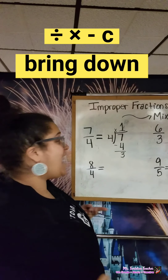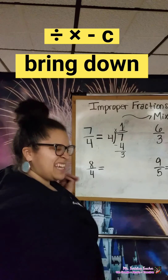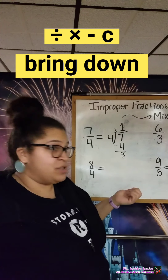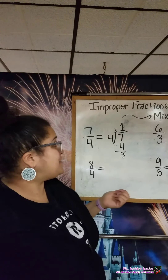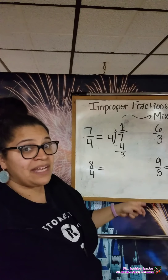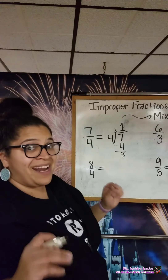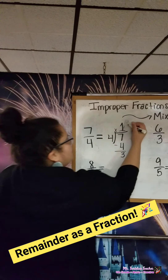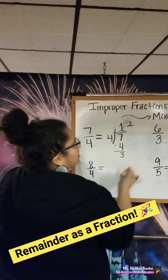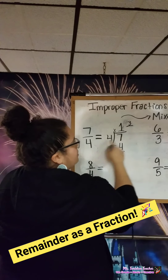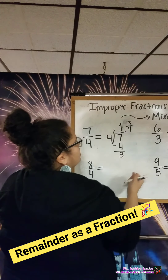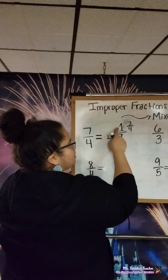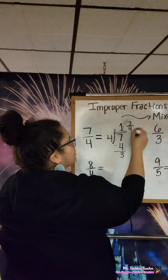The fourth step is to compare — is 3 less than 4? Yes, it is. And bring down is the last step, but we don't have anything to bring down, scholars. So that becomes our remainder. We've been talking about writing our remainders as fractions. So 3 goes in the numerator, the top part of a fraction, and 4, the divisor, goes in the bottom part. So the answer to 7 divided by 4 is 1 and 3 fourths.